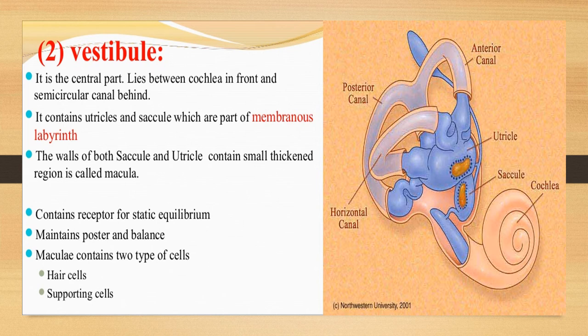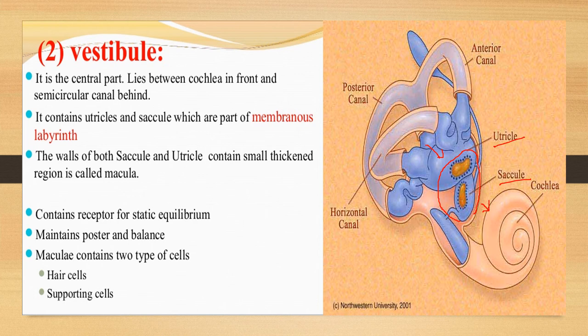The vestibule is the central part of the inner ear, lying between the cochlea and the semicircular canals. It consists of two regions: the utricle and saccule. The walls of both the saccule and utricle contain a small thickened region called the macula, which contains receptors for maintaining equilibrium, posture, and balance. The macula consists of hair cells and supporting cells.